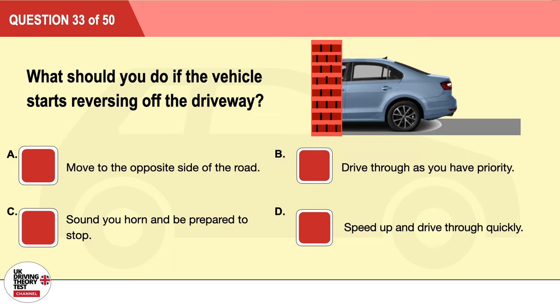Question 33: What should you do if a vehicle starts reversing off a driveway towards you? A: Move to the opposite side of the road. B: Drive through as you have priority. C: Sound your horn and be prepared to stop. D: Speed up and drive through quickly. The correct answer is C: sound your horn and be prepared to stop.